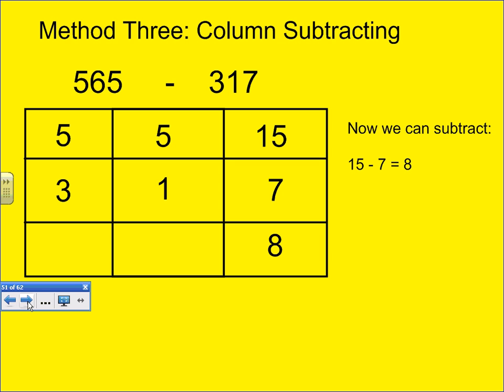Now, I move to the 10's column. 5 take away 1, and that's 4. Now, what is 5 take away 3? That is 2. So, we put that in the 100's place. My final answer, 248.